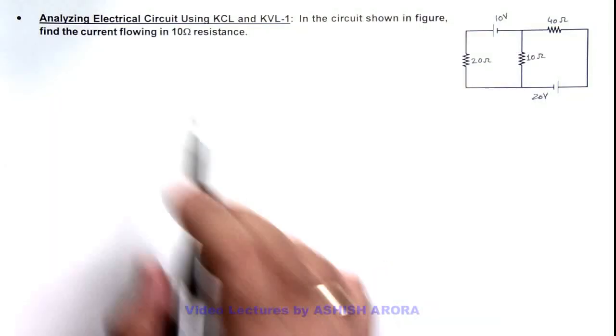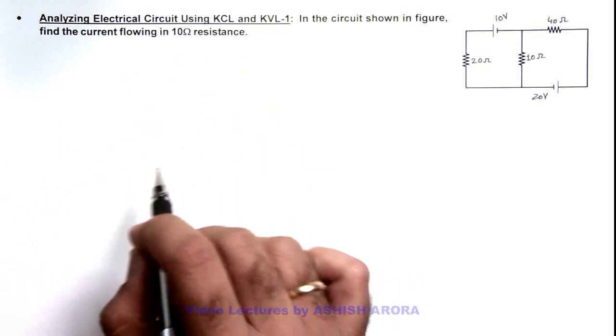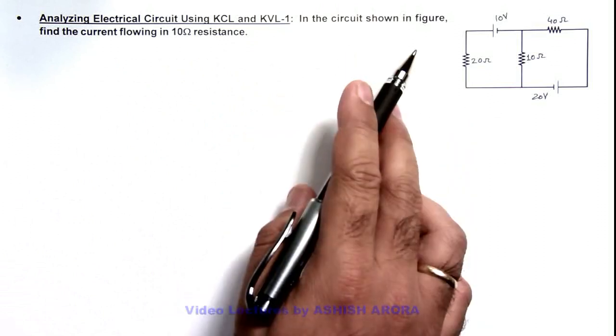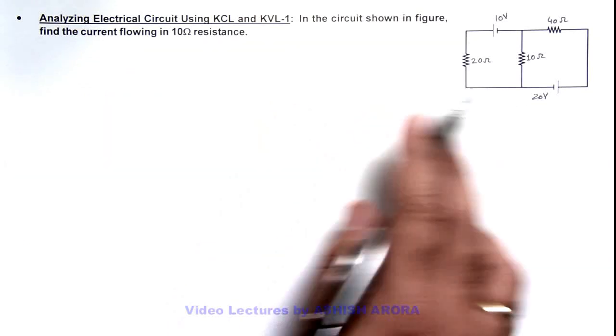In this illustration we'll analyze an electrical circuit using Kirchhoff's current law and Kirchhoff's voltage law. Here you can see in the circuit shown in figure, we are required to find the current flowing in this 10 ohm resistance.